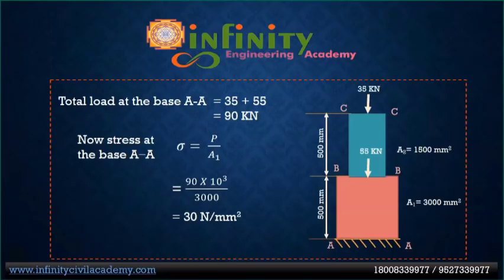Explanation for Question 2: The total load at base AA is the sum of the two vertical forces — 35 plus 55 equals 90. Stress at base AA: σ = Force / Cross-sectional area = 90 × 10³ / 3000 = 30 Newton per mm².